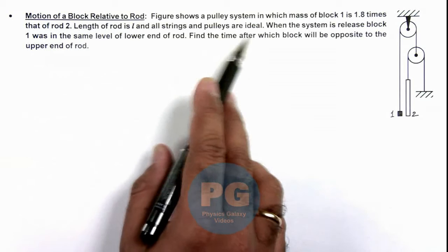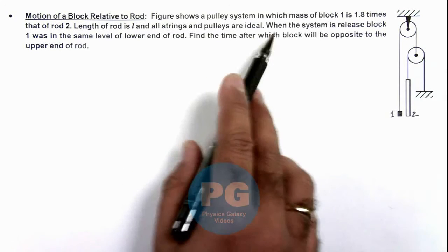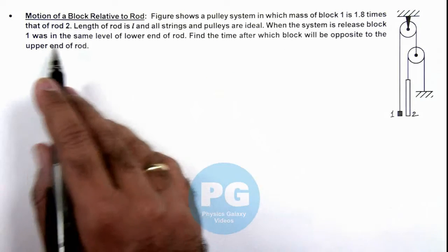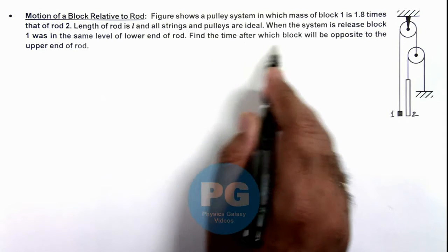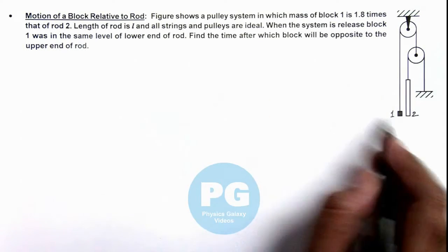And all strings and pulleys are ideal. It is saying when the system is released, block 1 was in the same level of lower end of the rod. We are required to find the time after which the block will be opposite to the upper end of the rod.